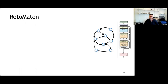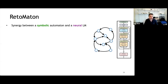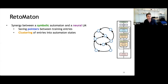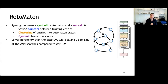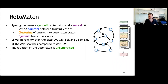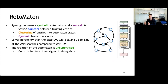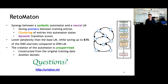To summarize: given a trained language model and a corpus, we construct an automaton. The key points are saving pointers between training entries and clustering entries into automaton states, with dynamic transition scores. This synergy achieves lower perplexity than the base language model while saving up to 83% of KNN searches compared to baseline KNNLM. The creation of this automaton is fully unsupervised, requires no additional training data, and can be constructed from either the original training data or from another domain.